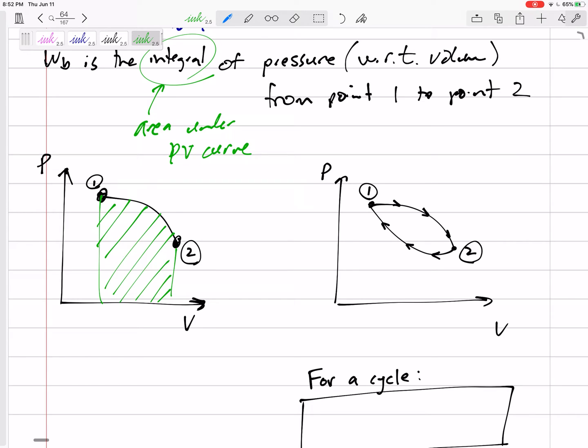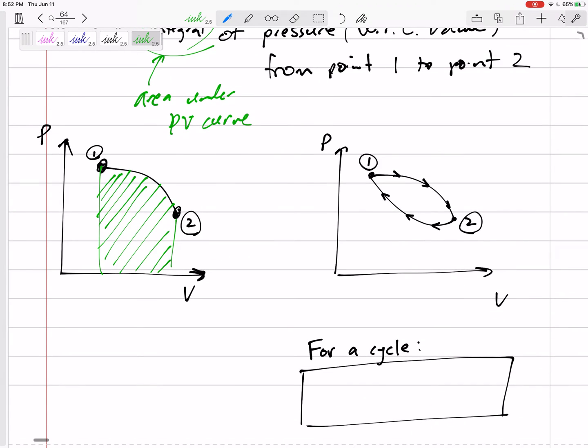So here, this right here would be the boundary work from point 1 to point 2. The boundary work from state 1 to state 2, let's say. That area, if I can calculate that area, estimate that area, or take an integral to find that area, then this area would be the boundary work. This is expansion. This is expansion. Our V is increasing. Our volume is increasing when we're going from state 1 to state 2. And expansion is work out. WB would be out.